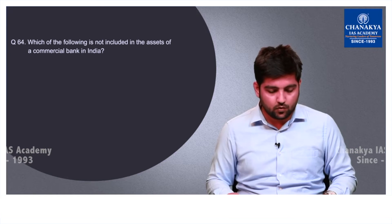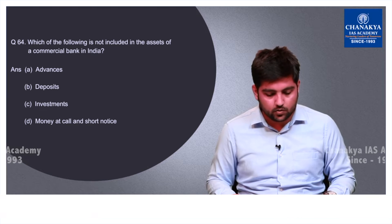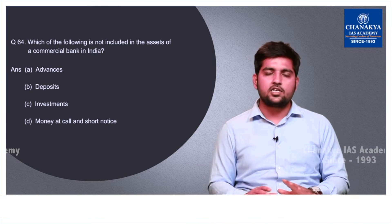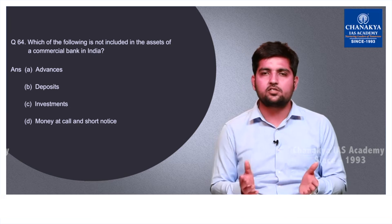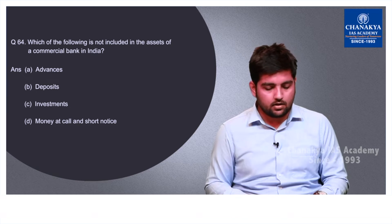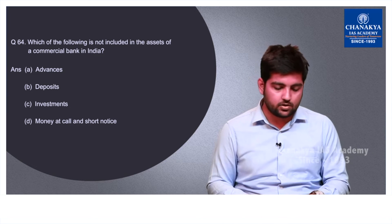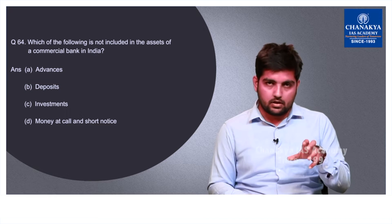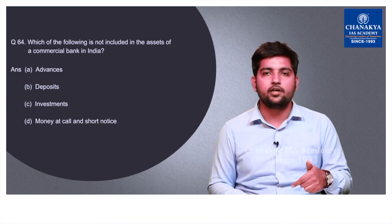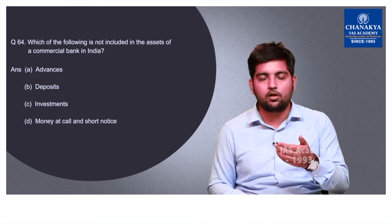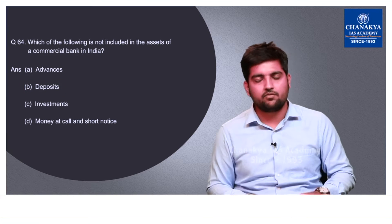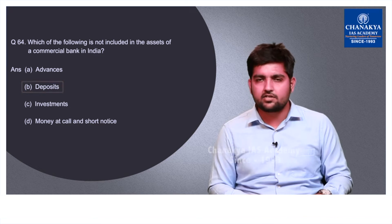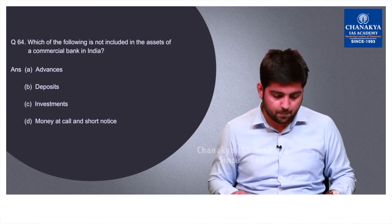Question number 64 asks which of the following is not included in the assets of a commercial bank in India. This is a very basic banking question. The correct option is B — deposits — because the bank has to pay interest on all deposits, whether time deposits or fixed deposits. The correct answer is B.